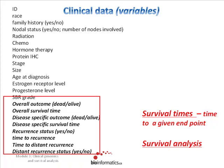There is also a number of clinical variables which have something to do with time. For example, the overall outcome — whether the patient is dead or alive at a particular time point. What was the overall survival time? What was the disease-specific survival time? Others may include recurrence status or time to relapse, distance recurrence status, and so on. These variables have something to do with time, and that's called survival time — the times to a given end point. These types of data require a special analysis called survival analysis.